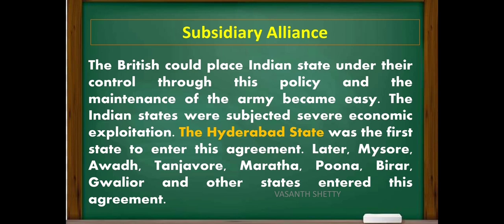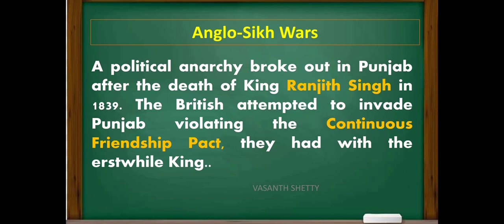The Indian states were subjected to severe economic exploitation. Hyderabad was the first state to enter this agreement. Later, Mysore, Thanjavur, Maratha Poona, Berar, Gwalior, and other states also entered this agreement.